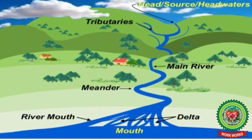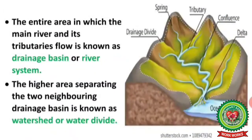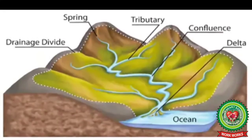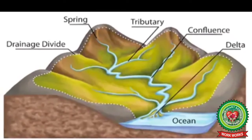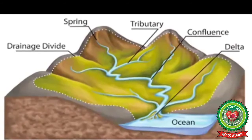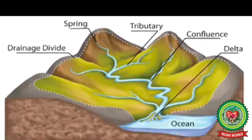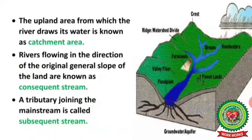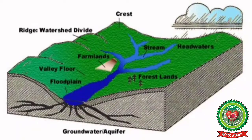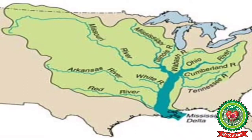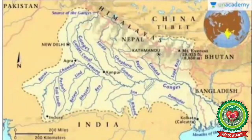The place where the river originates is its source, and where it empties into the sea or lake is its mouth. The path followed by a river from source to mouth is the river valley. The entire area in which the main river and its tributaries flow is the drainage basin or river system. The higher areas separating two neighboring drainage basins are the watershed or water divide. The upland area from which a river draws its water is its catchment area. Rivers flowing in the direction of the original slope are consequent streams; a tributary joining the main stream is called a subsequent stream.